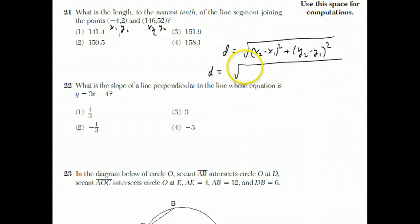Square root of parentheses minus 4 minus 146 squared plus 2 minus 52. You have to be consistent if you're doing slope, but in this case since it's getting squared, it would work out anyway.